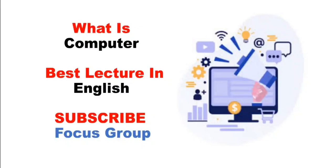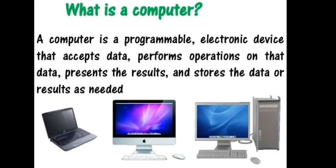In this video we are going to discuss about computer systems — specifically the basic purpose of a computer system. A computer is a programmable machine that gets data from the user and converts that data into useful information. Data is an input and information is an output.